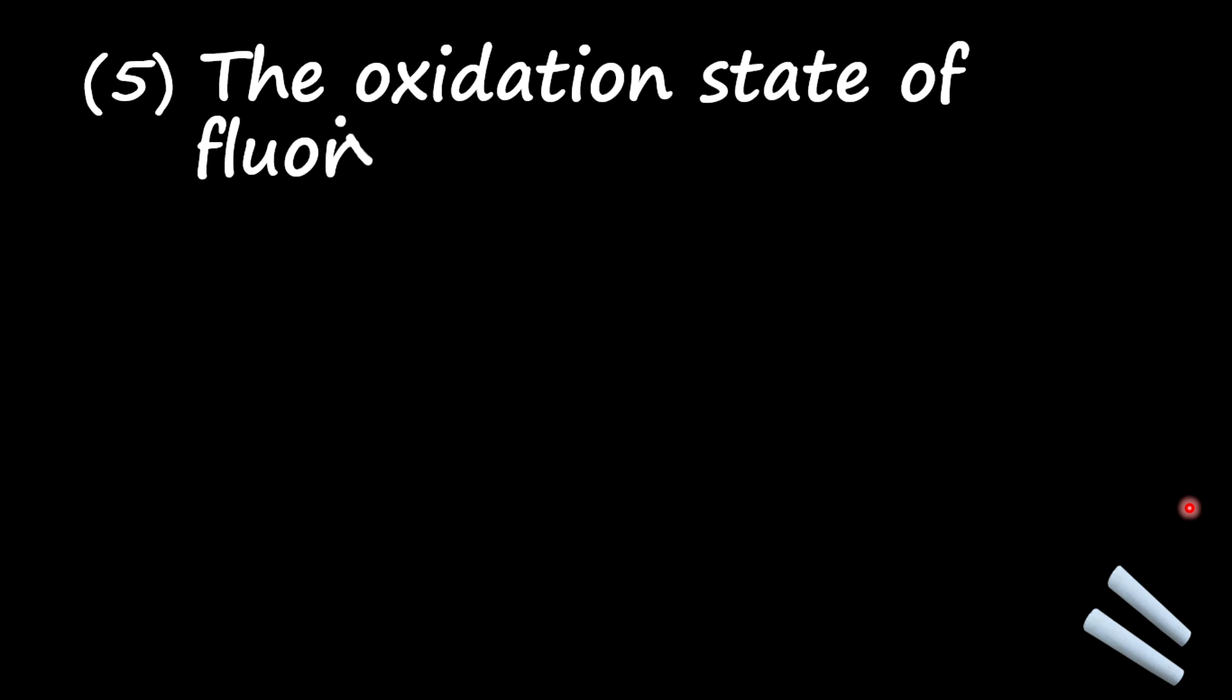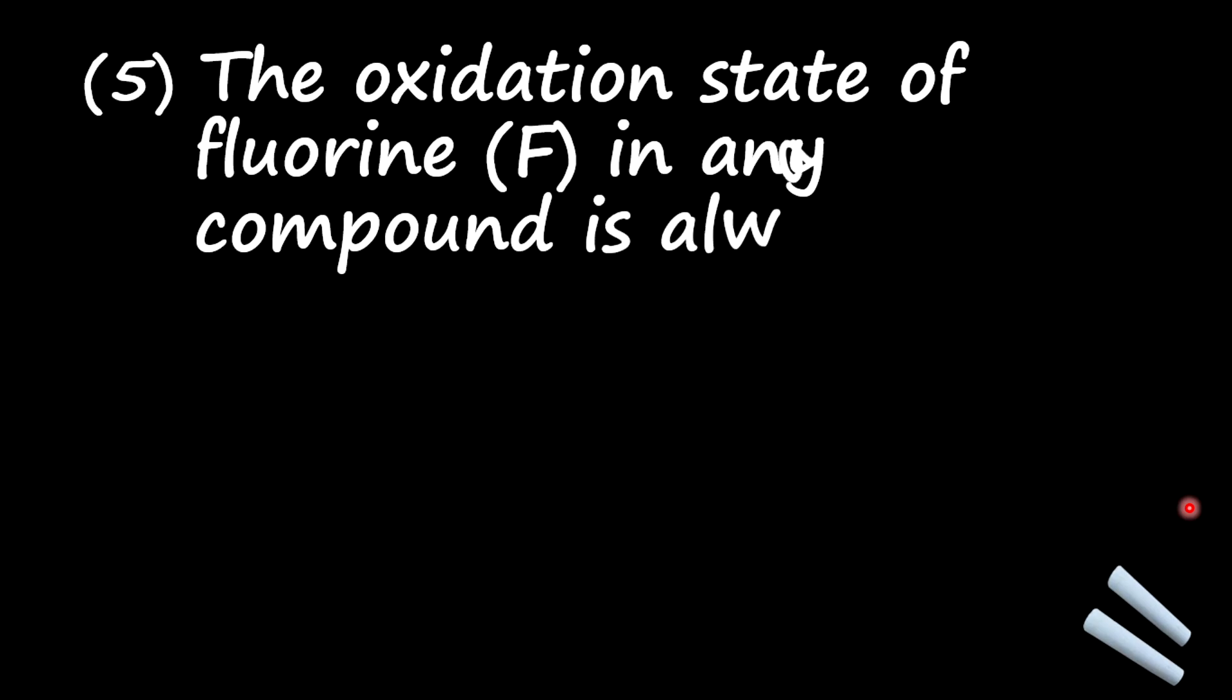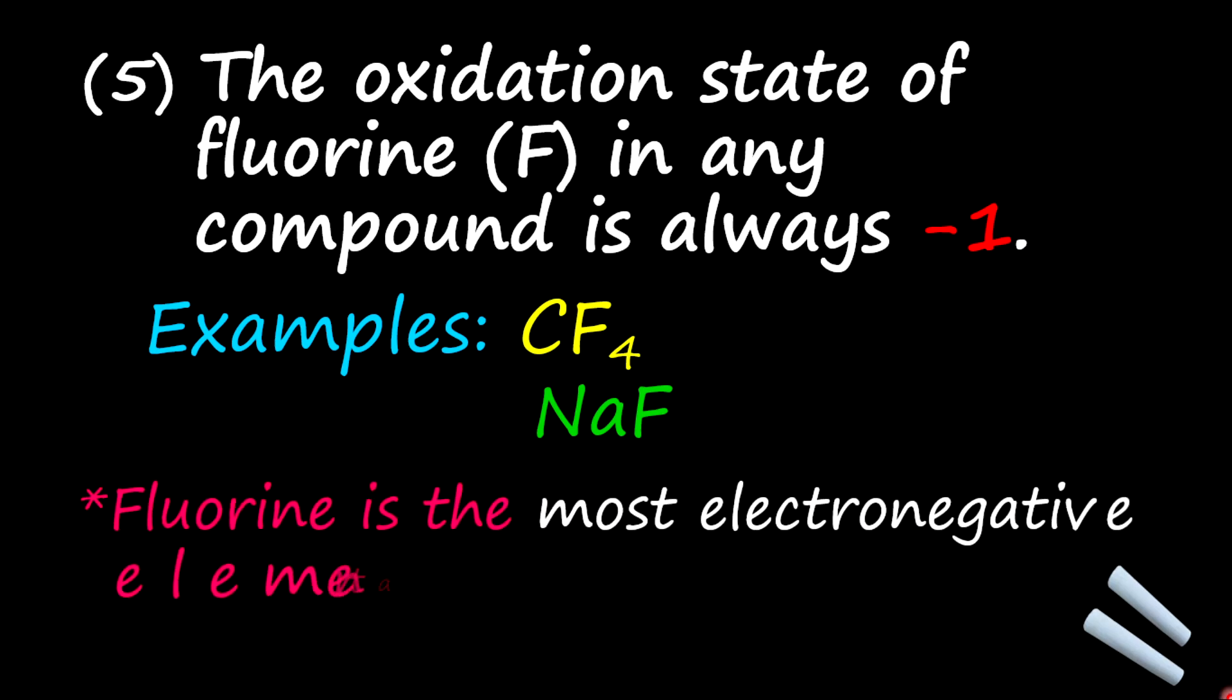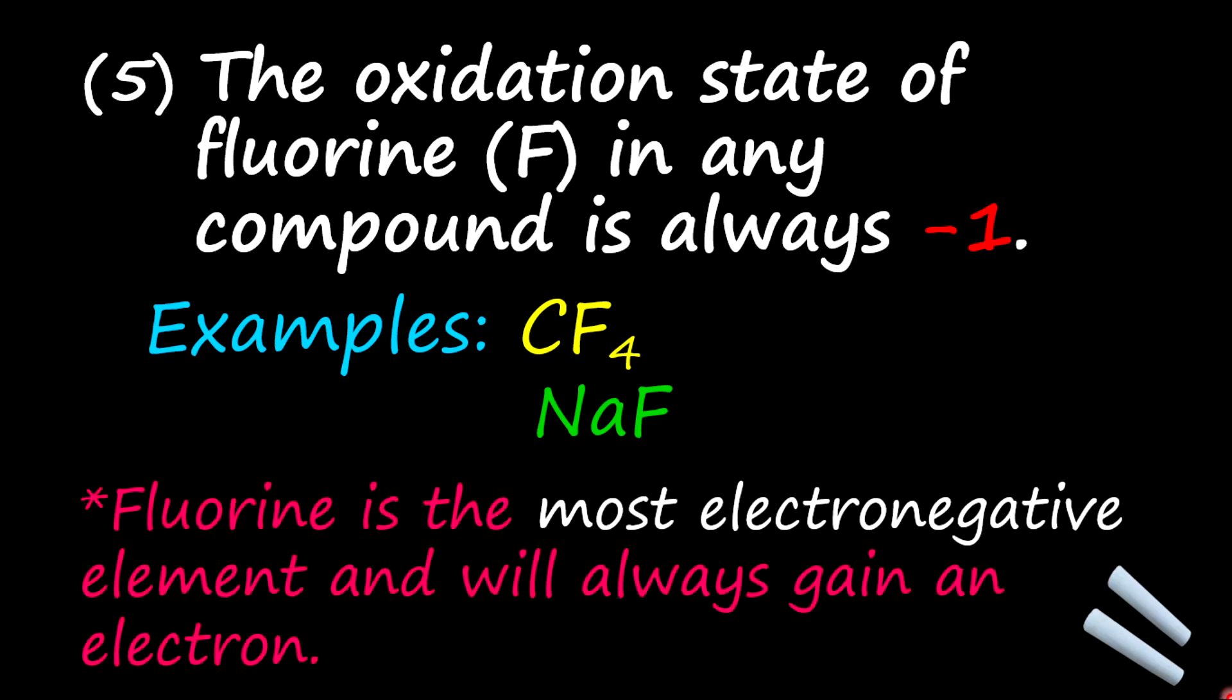Let's jump into another rule. This one states that the oxidation state of fluorine in any compound is always negative one. This is cool and why is this so? Let's look at some examples of compounds that contain fluorine. And so CF4, for example, which is carbon tetrafluoride, or we have sodium fluoride. Now, the reason why fluorine is always negative one is simply because fluorine is the most electronegative element and will always gain an electron.